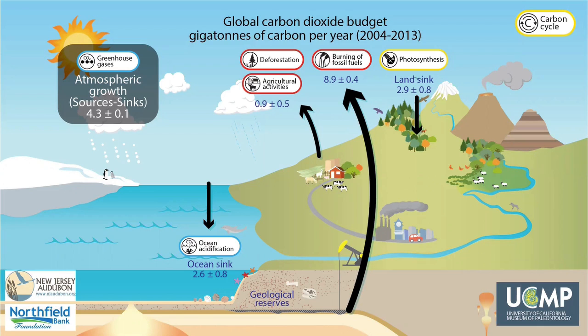Human activities such as the burning of fossil fuels from geologic reserves, deforestation, and agriculture contribute carbon dioxide to the atmosphere. Carbon dioxide is also absorbed in a variety of ways, including by the ocean and photosynthesizing plants. However, these sinks do not remove all of the carbon dioxide released by human activities into the atmosphere. As a result, the amount of carbon dioxide in the atmosphere, which is also a greenhouse gas, continues to grow, raising average global temperatures.